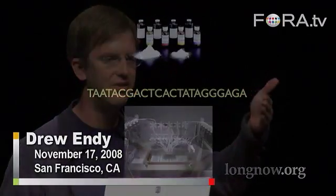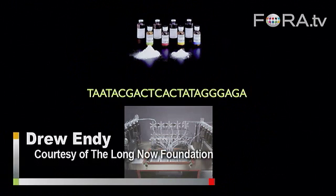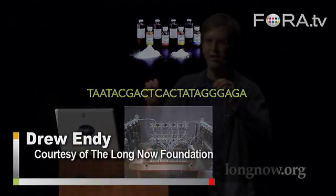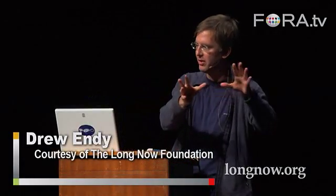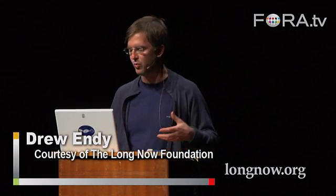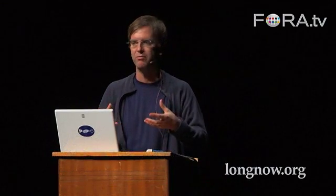Four of these bottles up at the top here — one would be a bottle of A, T, C, and G. And you hook these bottles up to a machine. Into the machine comes information from a computer: a sequence of DNA — T, A, A, T, A — whatever you'd like to build. And that machine will stitch the genetic material together from scratch.